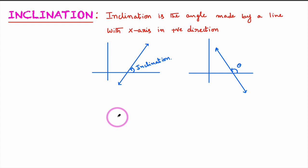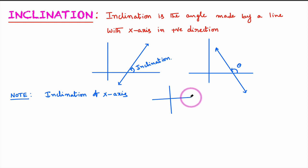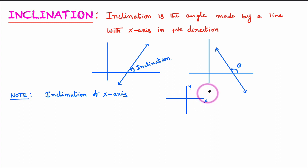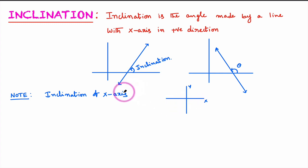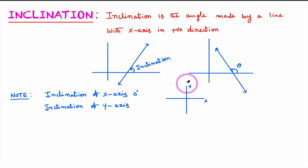Now we will understand inclination with a few more examples. Inclination of the x-axis: what is the angle made by the x-axis with the x-axis? As both coincide, there is no angle, so we say that the inclination of the x-axis is 0 degrees.